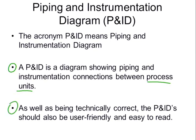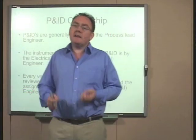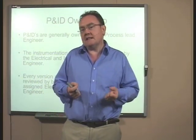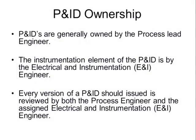As well as being technically correct, the P&ID should also be user-friendly and easy to read. P&IDs are generally owned on the project by the process lead engineer. The instrumentation element of the P&ID is handled by the electrical and instrumentation engineer. Every revision of a P&ID issued is reviewed by both the process engineer and the assigned electrical and instrumentation engineer.